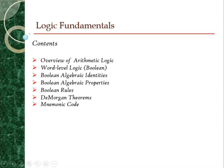So these are the contents of this chapter. We are going to look into the overview of arithmetic logic and then Boolean algebraic identities with the properties and its rules. And then we are going to look into the De Morgan theorems and lastly, the mnemonic code.